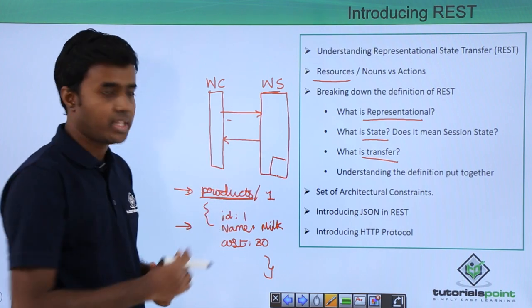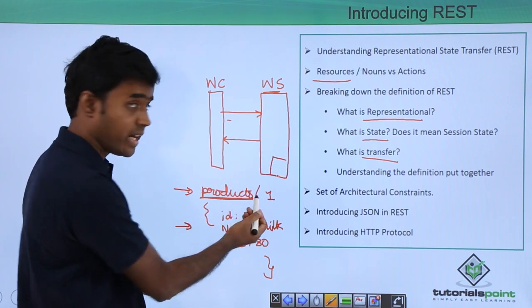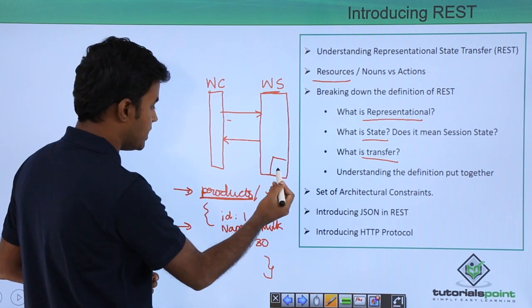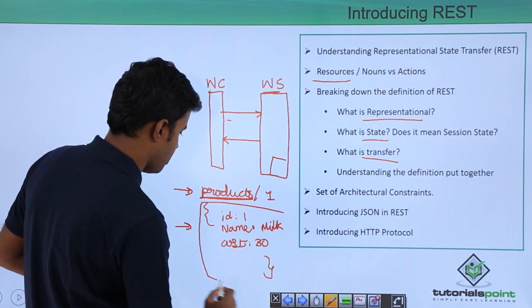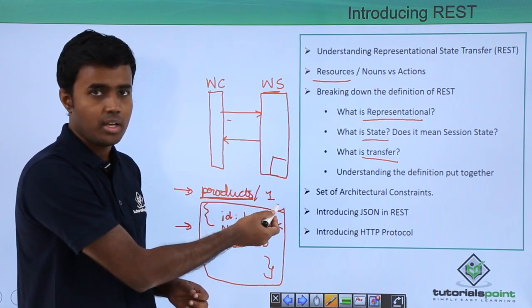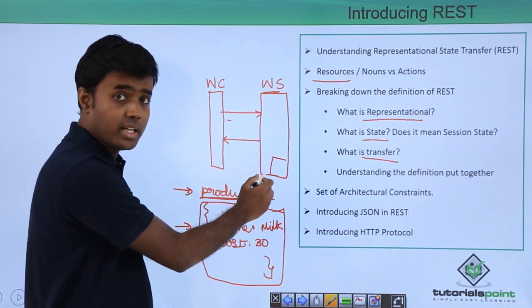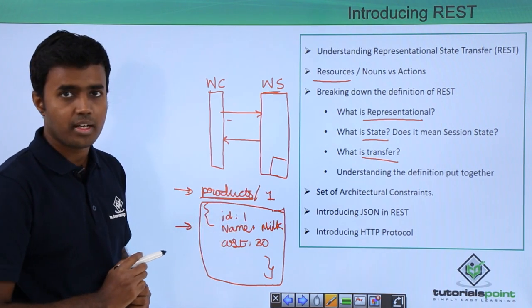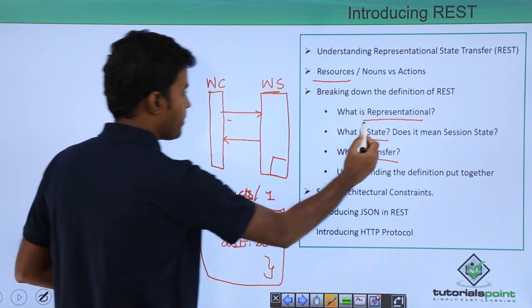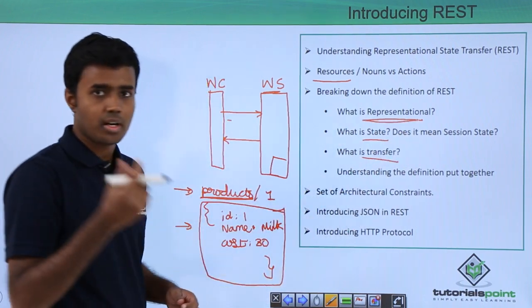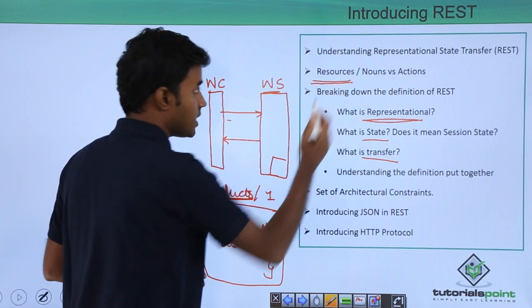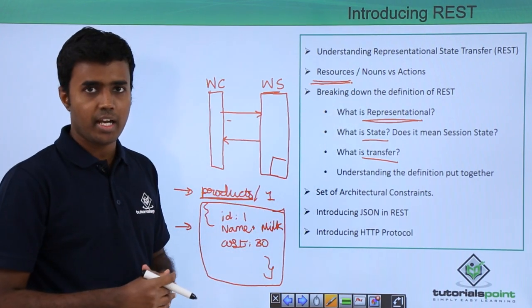What happens when the client requests for that resource called milk or products? The server returns a representation of that resource. The resource is still with the server, but it is only returning the representation of that resource. The representation is JSON here. The representation is something that your server returns to the client, and resources are something that are exclusively held by your server.